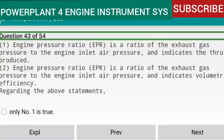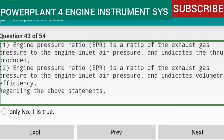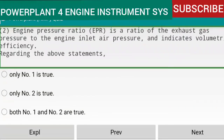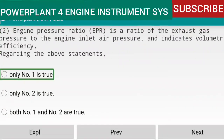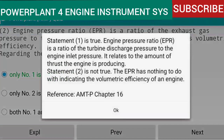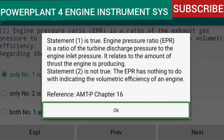Question 43 of 54: Regarding two statements about EPR — only statement one is true. Statement one: EPR is a ratio of the exhaust gas pressure to the engine inlet air pressure and indicates the thrust produced. This is true — EPR is the ratio of turbine discharge pressure to engine inlet pressure and relates to the amount of thrust the engine is producing. Statement two, which claims EPR indicates volumetric efficiency, is not true.